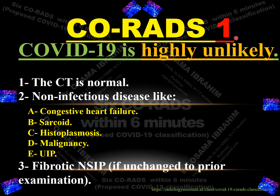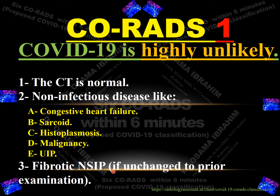CO-RADS 1 means COVID-19 is highly unlikely. We consider it CO-RADS 1 if the CT is normal, or if there are non-infectious diseases like congestive heart failure, sarcoidosis with bilateral hilar lymphadenopathy, histoplasmosis or eggshell calcification of lymph nodes, malignancy with mass in the lung, usual interstitial pneumonia, or fibrotic non-specific interstitial pneumonia which is unchanged from prior examination.